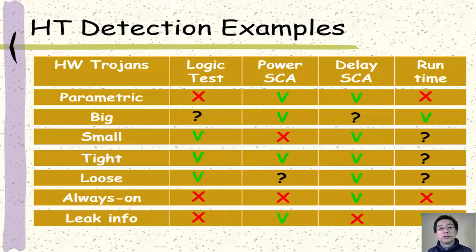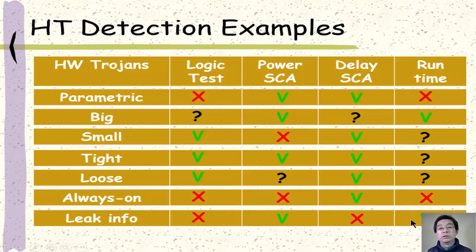Finally, as mentioned earlier, one malicious purpose of hardware trojans is leaking sensitive information. For this type of hardware trojan, logical test may not detect it because leaking information does not change other parts of the system's functionality. For example, if information leaks through an added antenna, the path delay may not be detected either. However, the power side channel may be able to detect it — once the antenna is activated, power may become higher. Also at runtime, once we know the target of the hardware trojan is to leak information, we can monitor the data communication channel of the system and detect such hardware trojans.